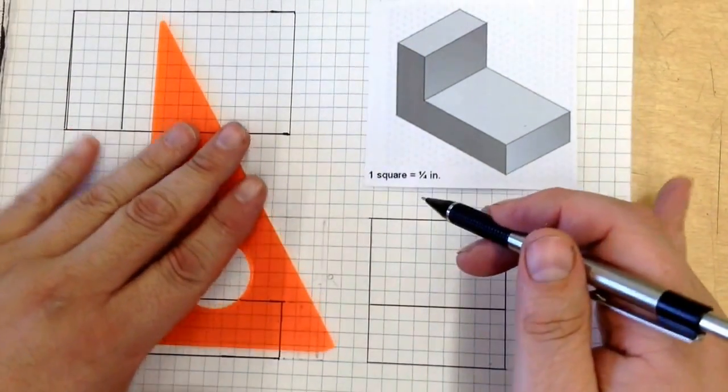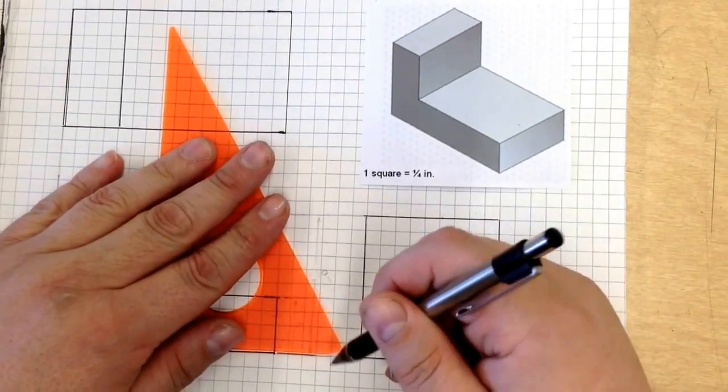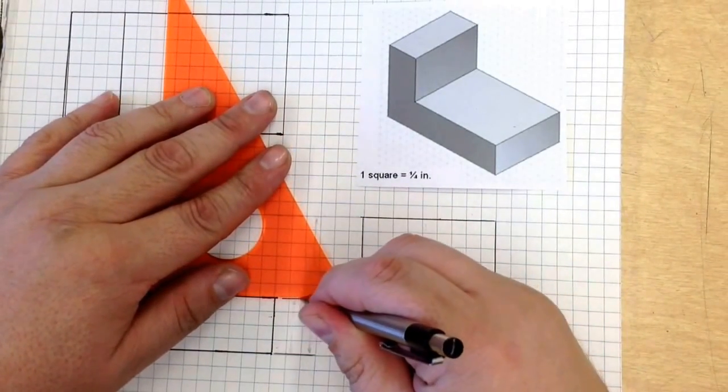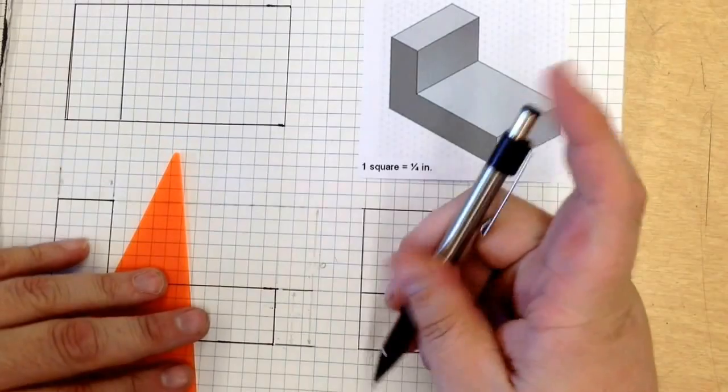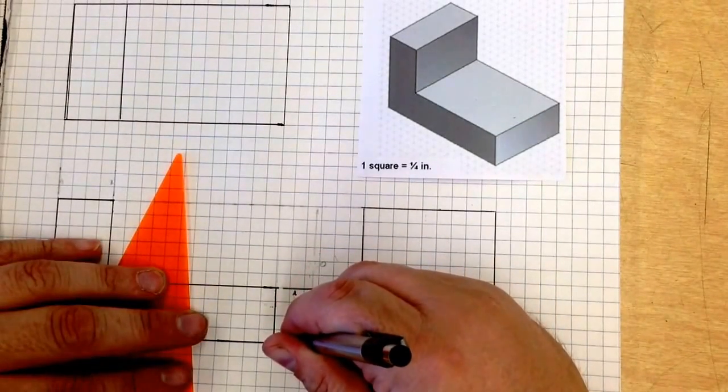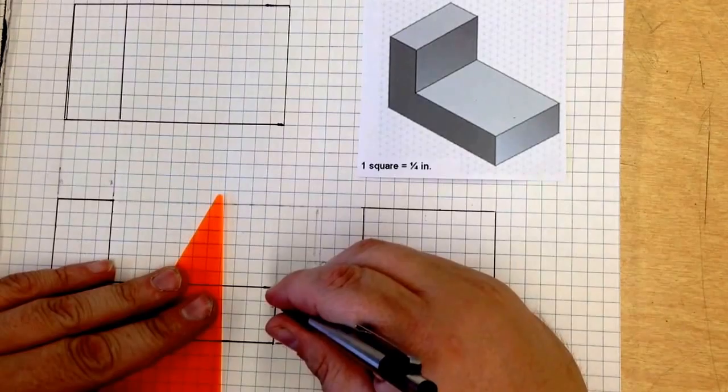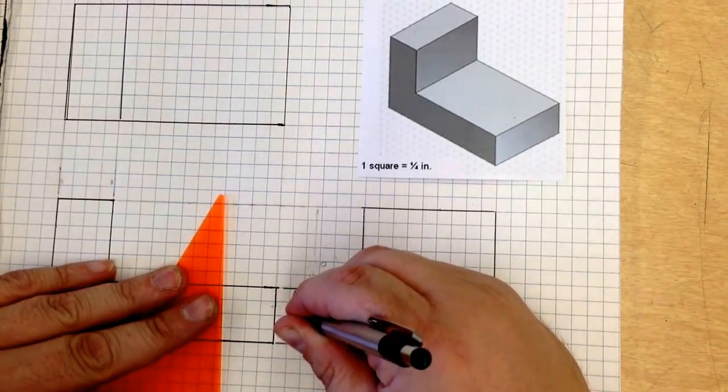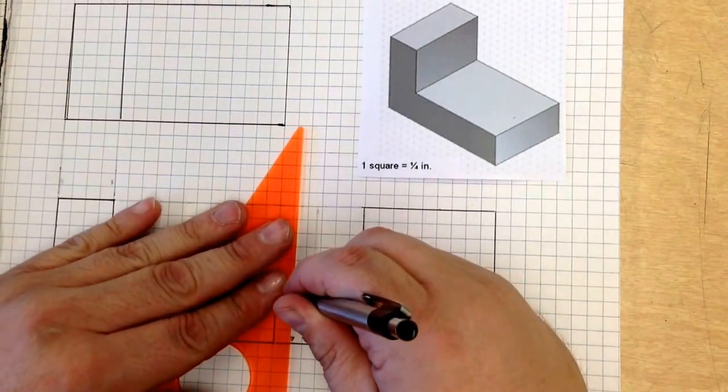So I'm going to start down here, and just start with some dimension lines, like so. Have my arrows going in, and this is four boxes, which is 1.00 inches.